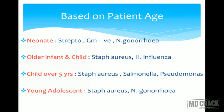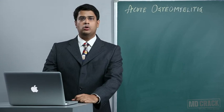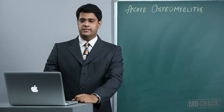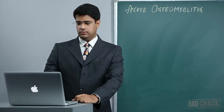Classifying by patient age: in the neonate group the most common organisms are Streptococcus, gram-negative organisms, and Neisseria gonorrhoeae. In older infants and children it is Staph aureus and H. influenzae. Children over 5 years again show Staph aureus, Salmonella, and Pseudomonas. In young adolescents it is Staphylococcus aureus and Neisseria gonorrhoeae. You may note that Staphylococcus aureus is present in almost all age groups.